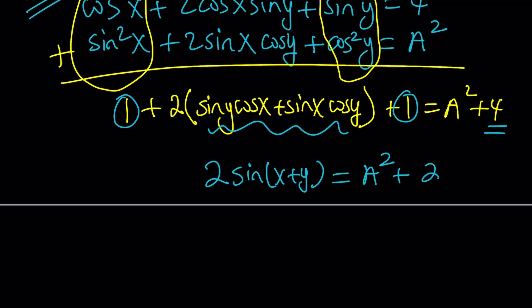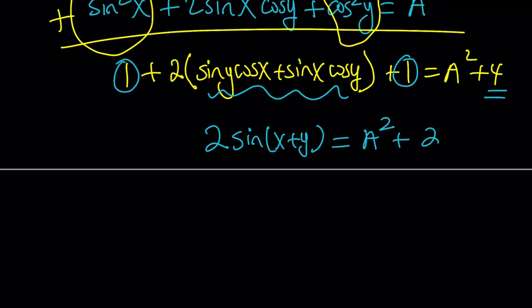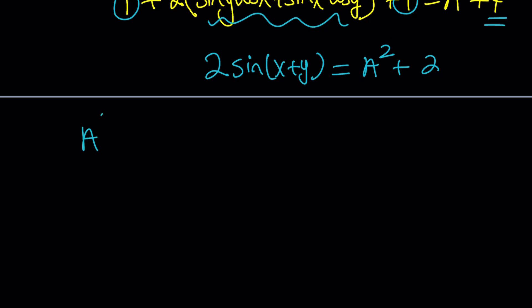Now, you can definitely go ahead and divide both sides by 2, and so on and so forth. But my goal is not to solve for sine of something. I want to solve for a, and here's what I'd like to do. Let's isolate a squared. That gives us 2 sine of x plus y minus 2.